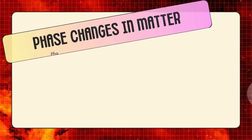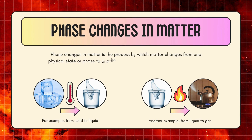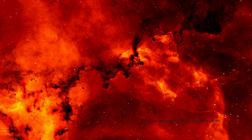Phase changes in matter is the process by which matter changes from one physical state or phase to another. The three most common phases of matter are solid, liquid, and gas. For example, from solid to liquid, or from liquid to gas.